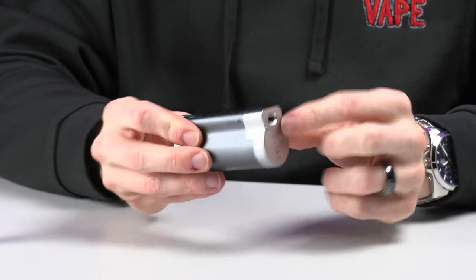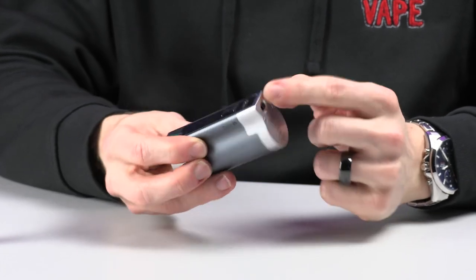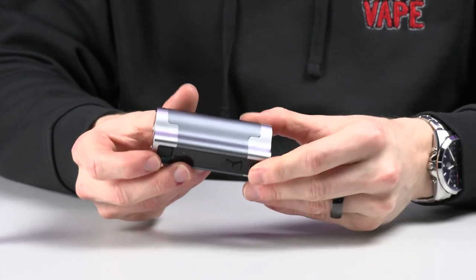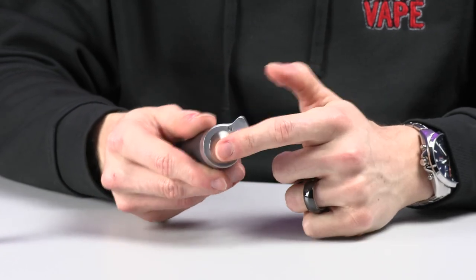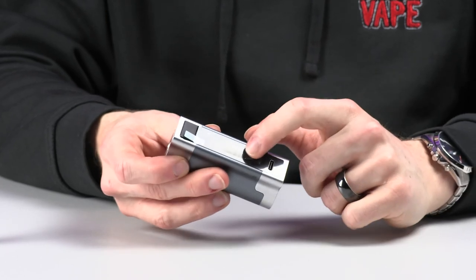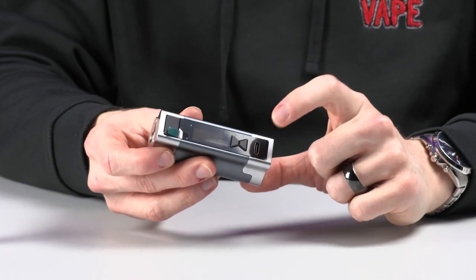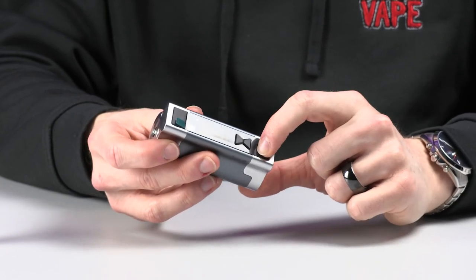So this mod has an on and off switch on the bottom. It has a 3,200 milliamp hour capacity battery. We have a 510 thread adapter on the top. We have a fire button, two adjustment buttons, and a USB type C charging port.